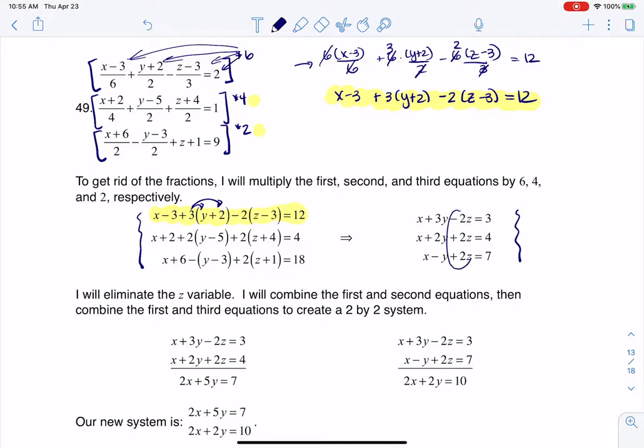The z's, they all have a coefficient on the order of 2, and I've got 1 with a negative and 2 with a positive, so I can combine the first and second equations and the first and third equations pretty nicely. I don't even have to multiply by anything. So the first thing I'm going to do here is I'm going to add the first two equations together.